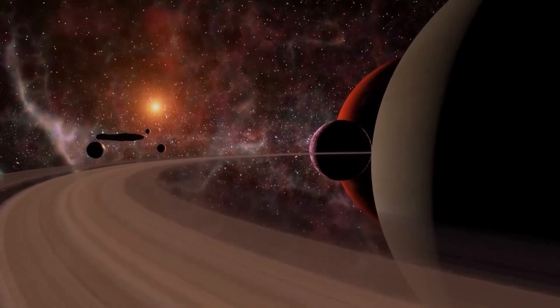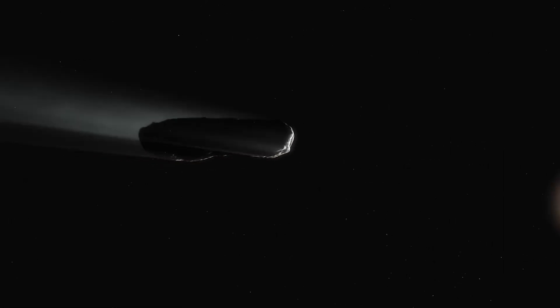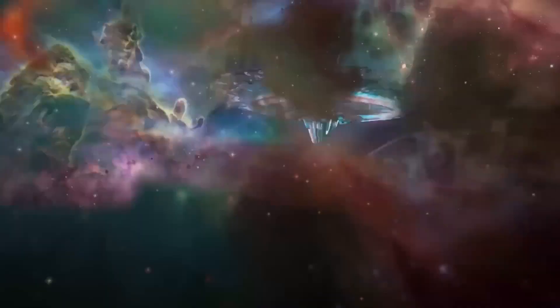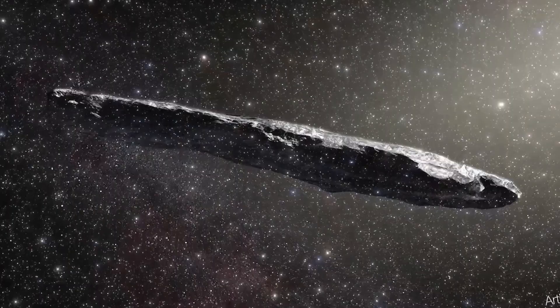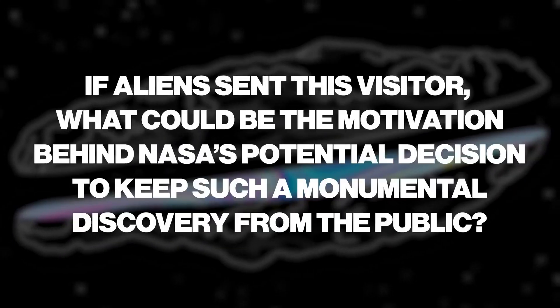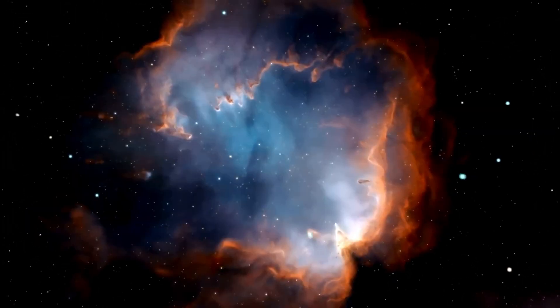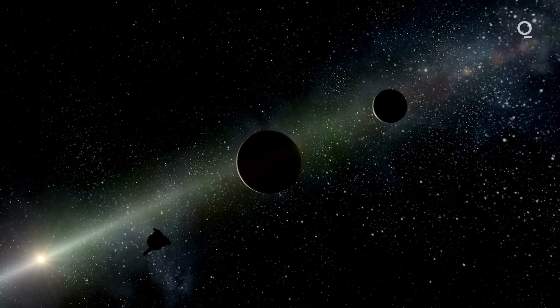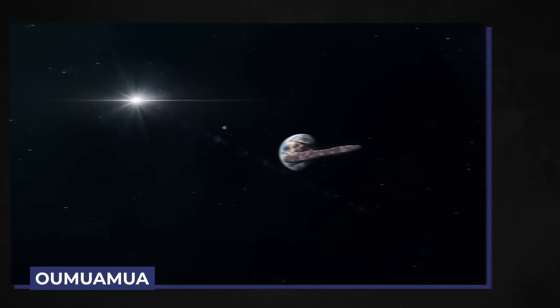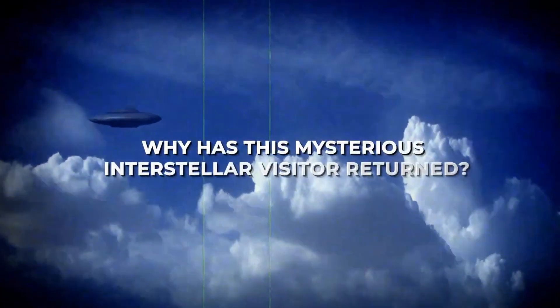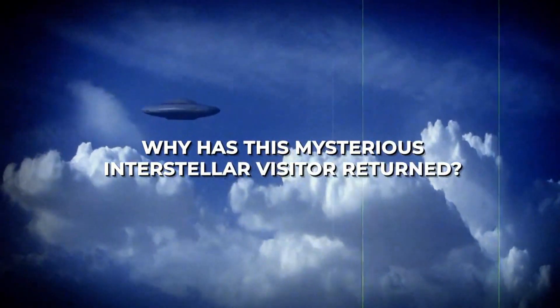Initially classified as an asteroid, Oumuamua's distinct shape and its unconventional path around the sun challenged this classification. Unlike asteroids, which obediently orbit within our solar system, Oumuamua seemed to chart its own course, hinting at a level of craftsmanship or engineering beyond what they typically observe in space rocks. As discussions surrounding Oumuamua unfolded, it became clear that this celestial wanderer defied easy explanations, sparking controversy among scientists and astronomers.